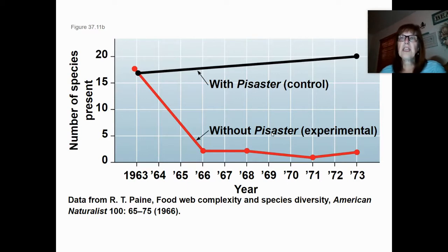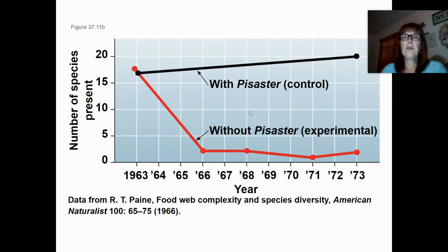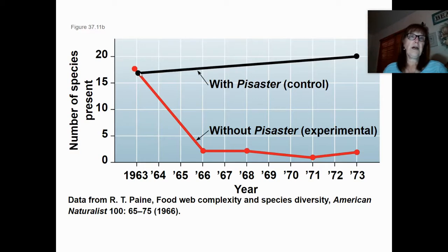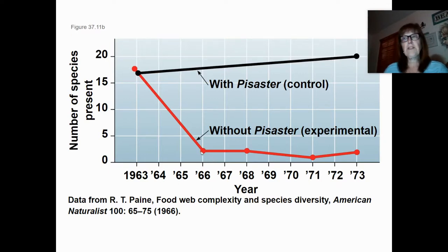Looking at the data from that experiment with Pisaster — the sea star in that area — there were about 18 to 20 different species present in that particular tide pool. When the sea star was removed, species diversity rapidly decreased over a two-to-three year period, to where there was almost no diversity in that population.